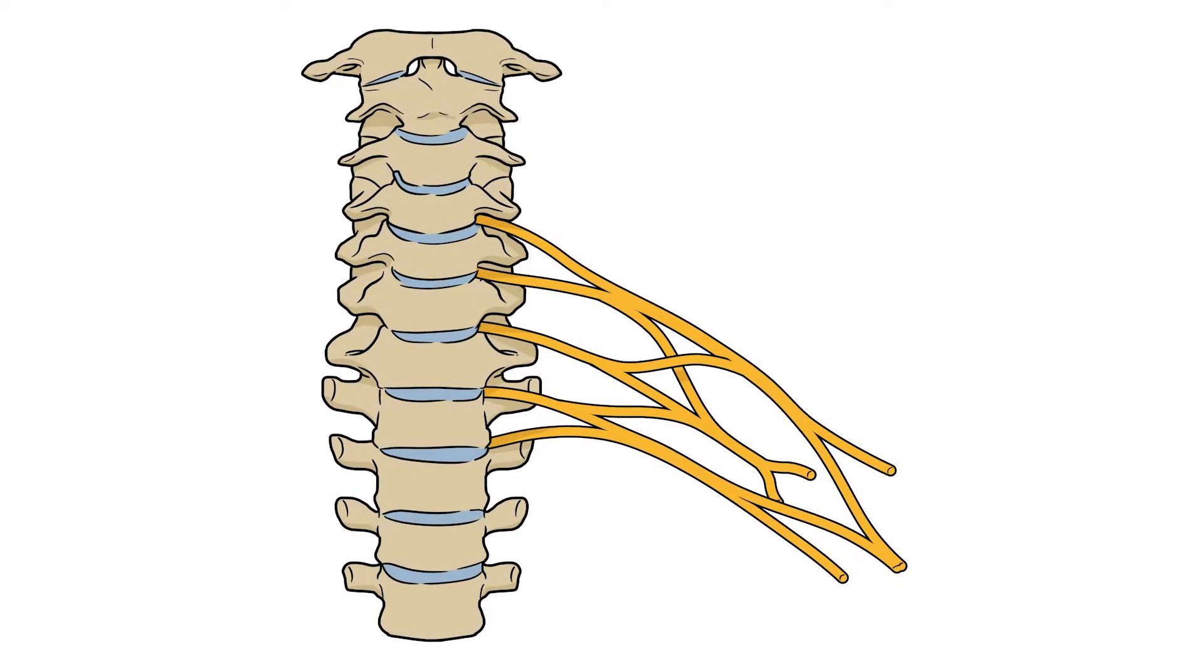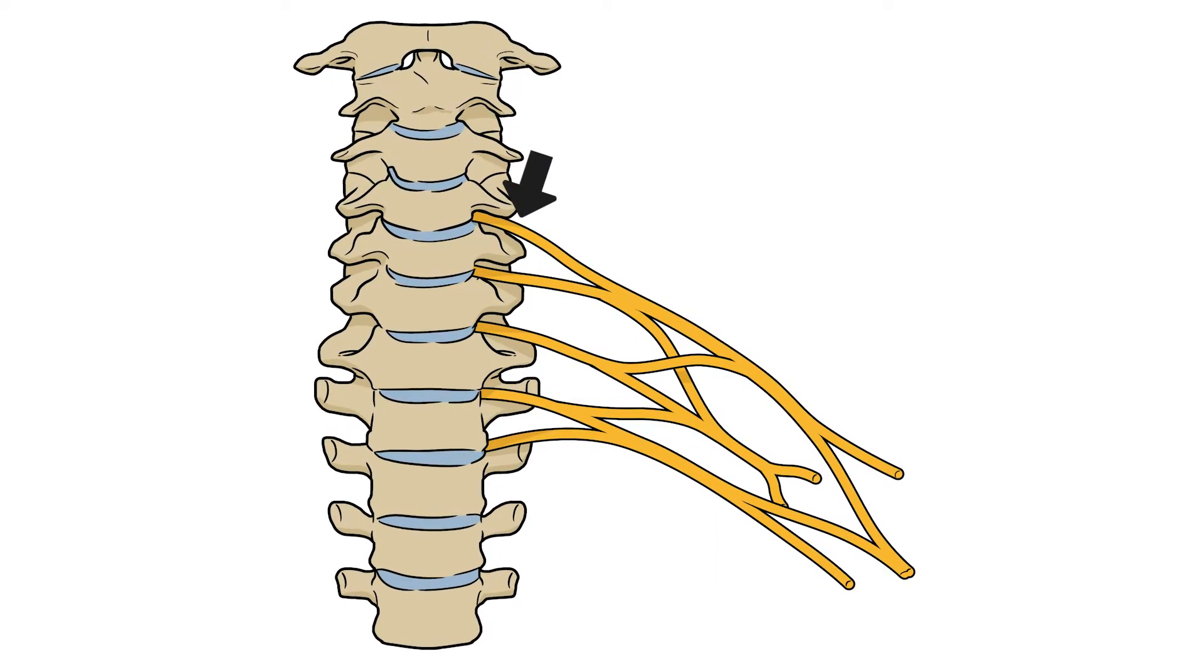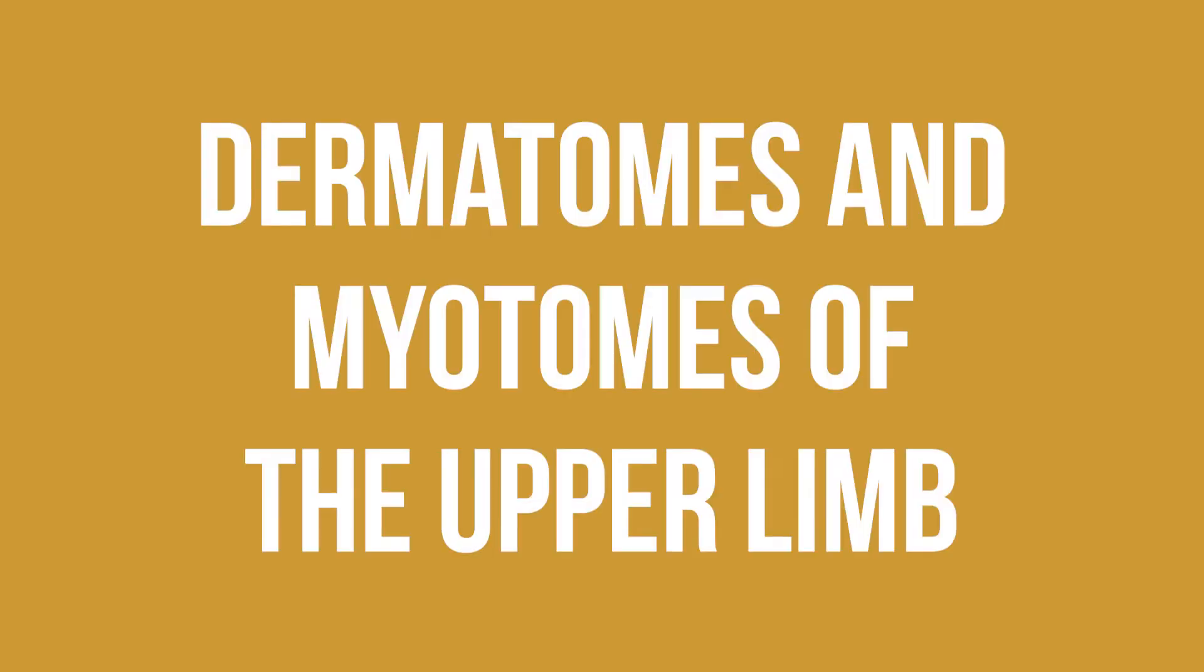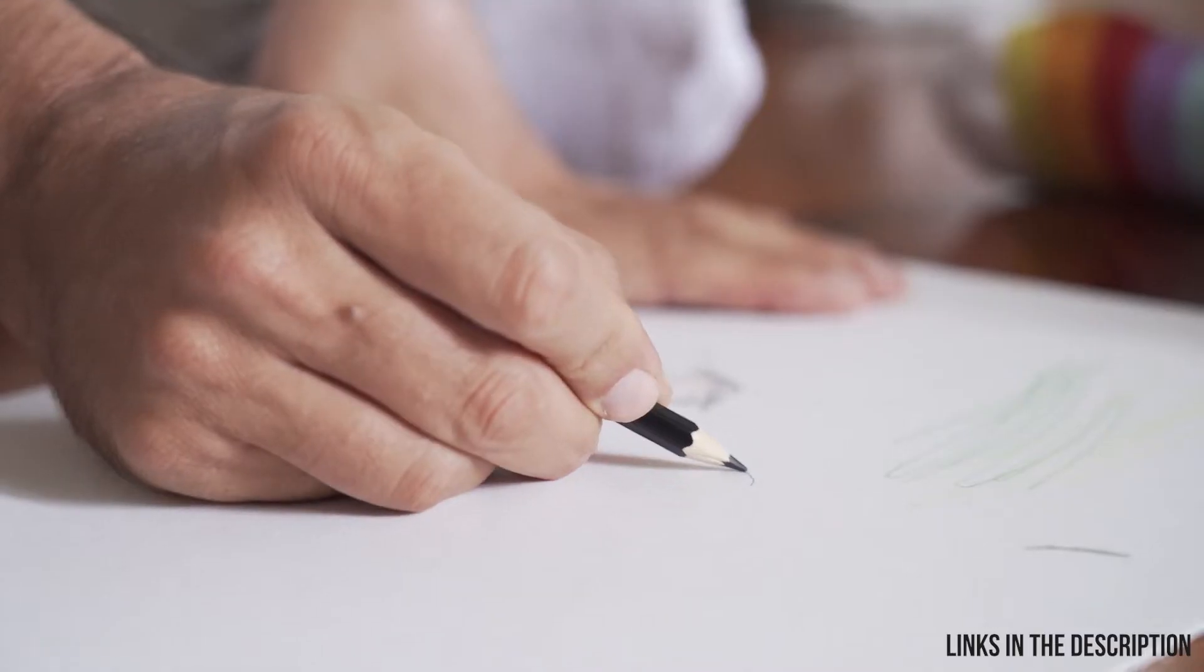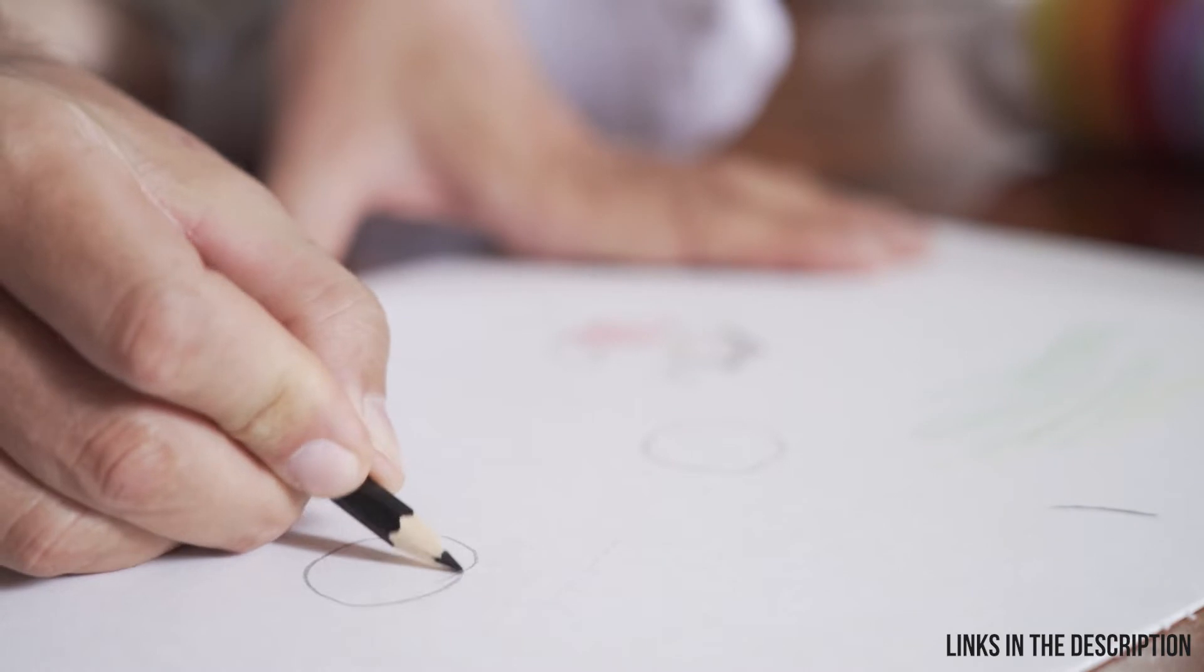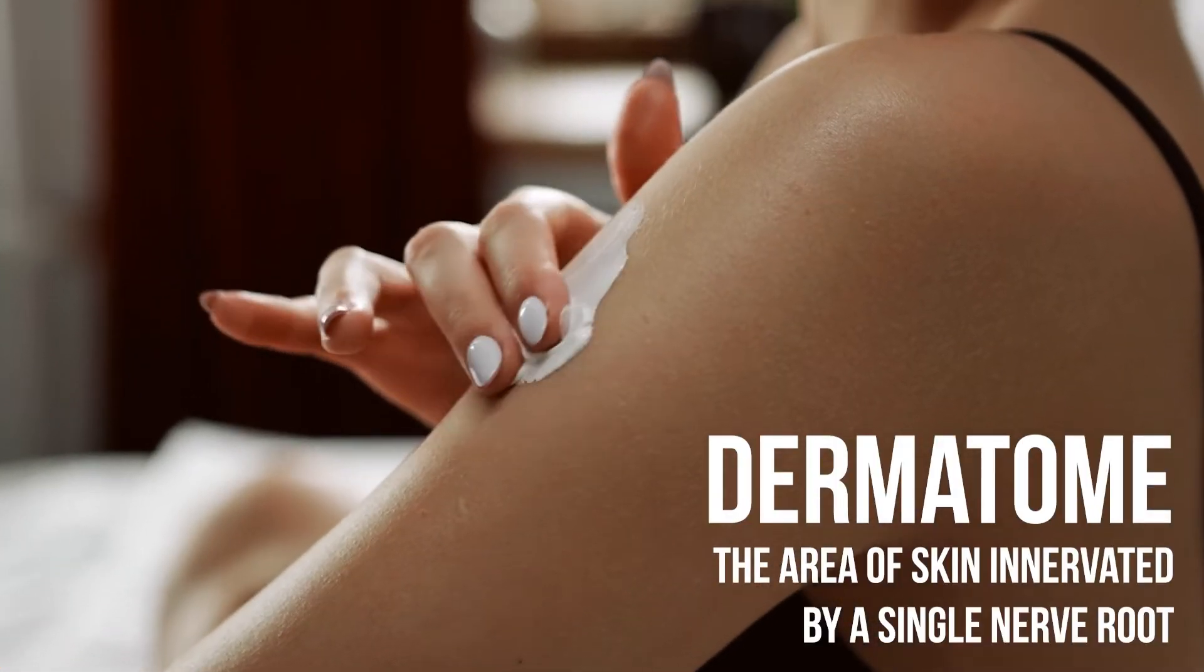In this video I'm going to look more closely at the nerve roots of the upper limb, drawing out the area of skin and the muscles that they supply, aka the dermatomes and myotomes of the upper limb. As always, if you want to draw along, you can download all of the illustrations from the links below.